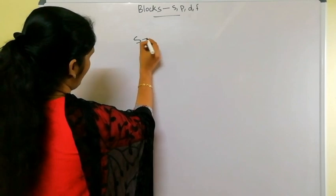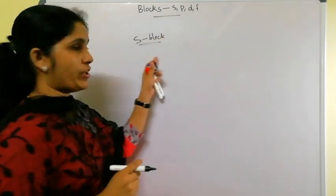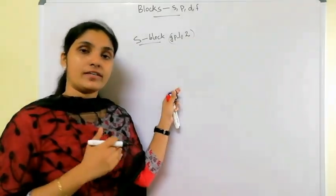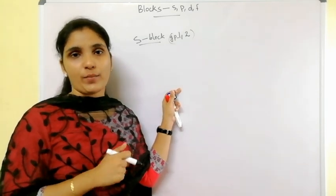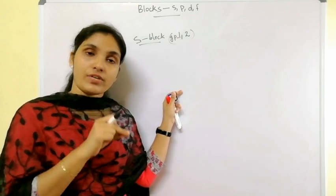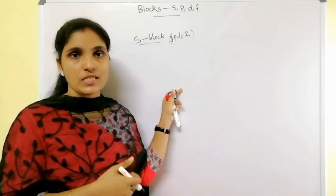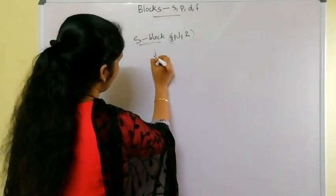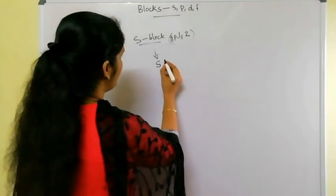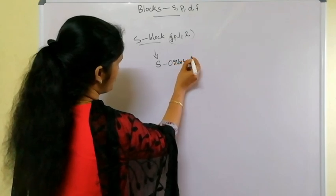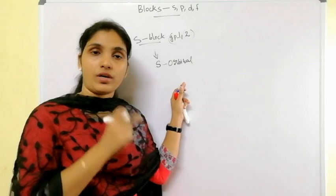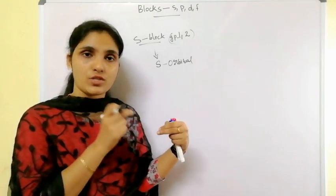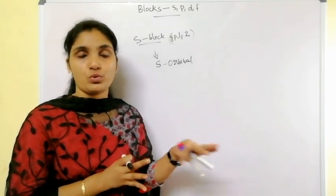The first topic is s-block elements. From our previous knowledge, we know that group 1 and group 2 are known as s-block elements. But that is not the actual definition. The actual definition is: an element belongs to the s-block if its last electron enters the s orbital. In an element, if the outermost or last electron moves to the s orbital, that element belongs to the s-block.